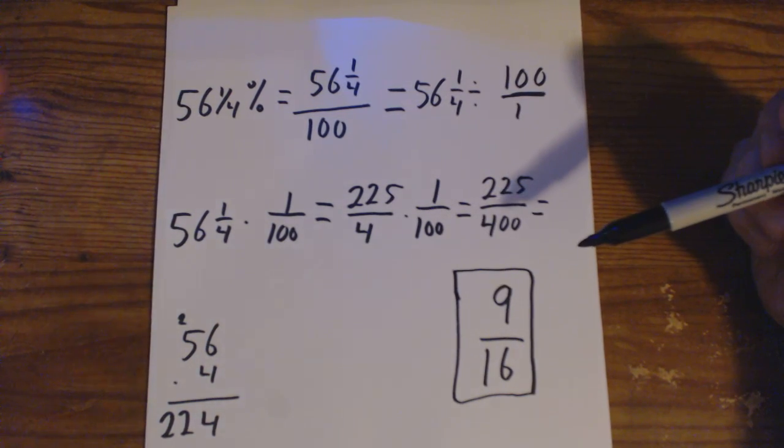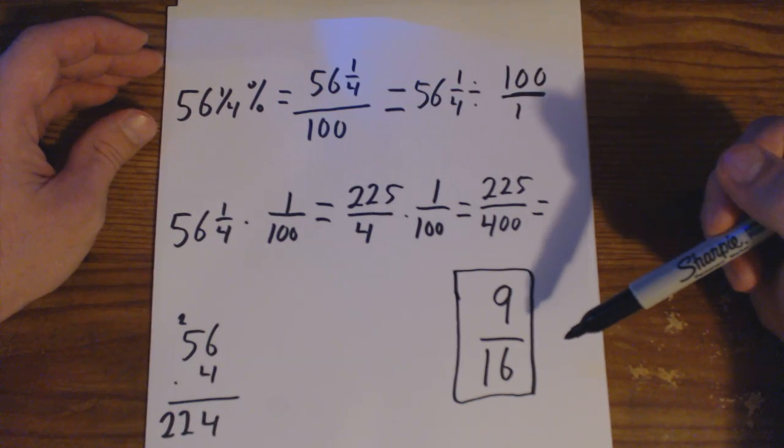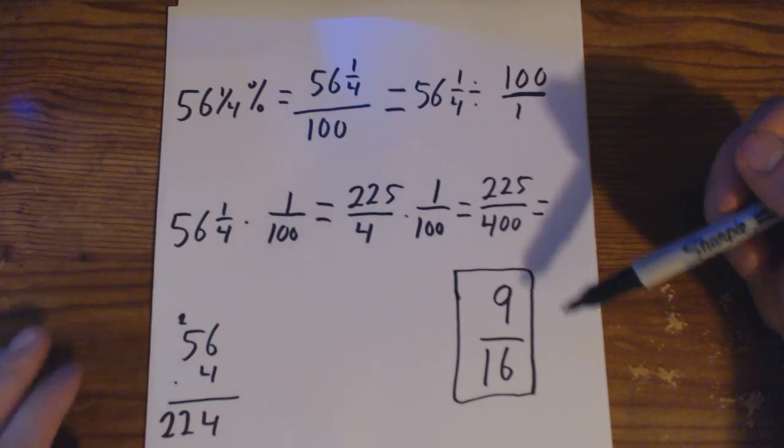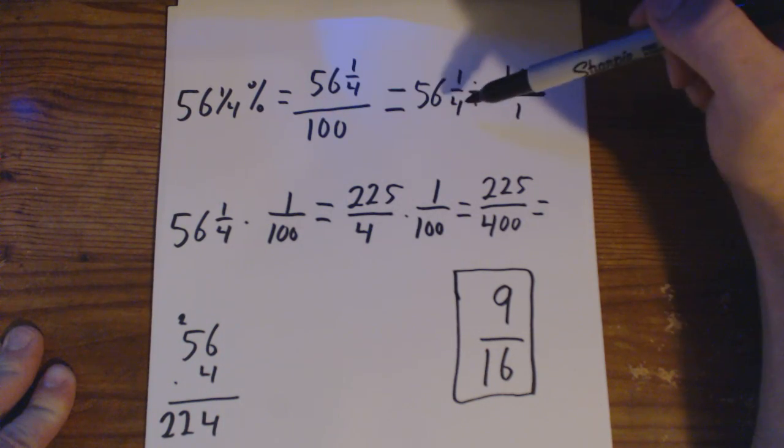So if you have a problem where they want you to convert a percentage into a fraction using complex fractions, this would be the process you would go by writing the percentage over 100 and taking it one step at a time.